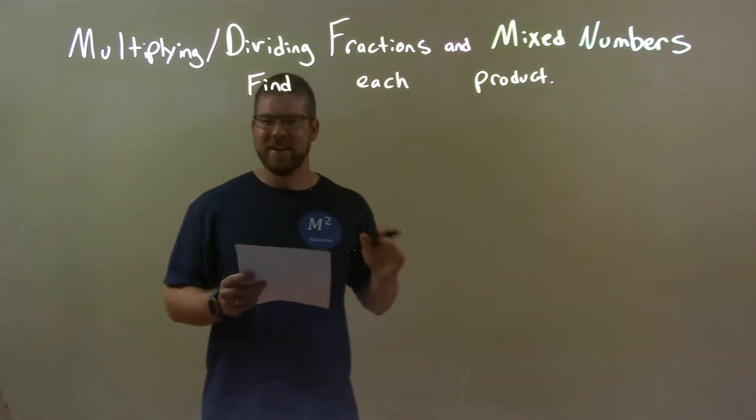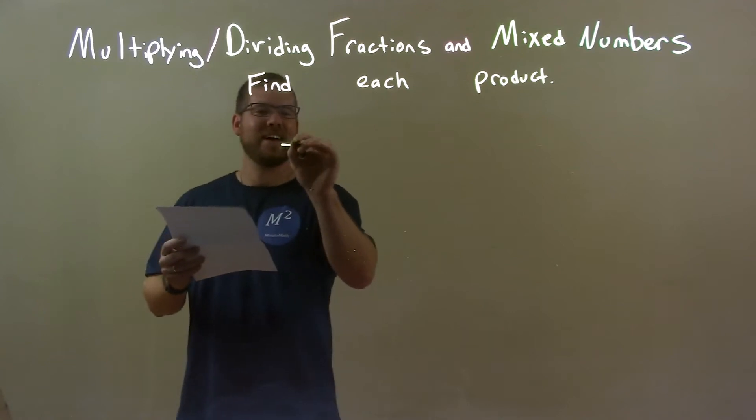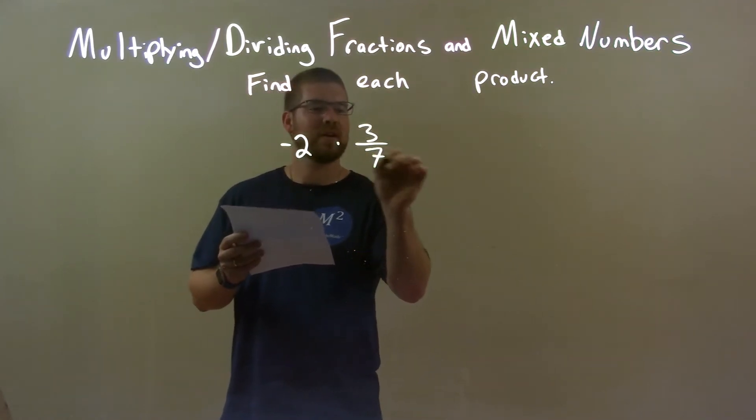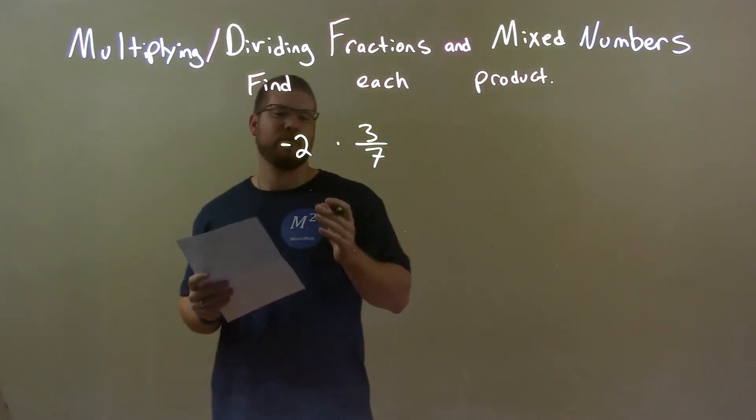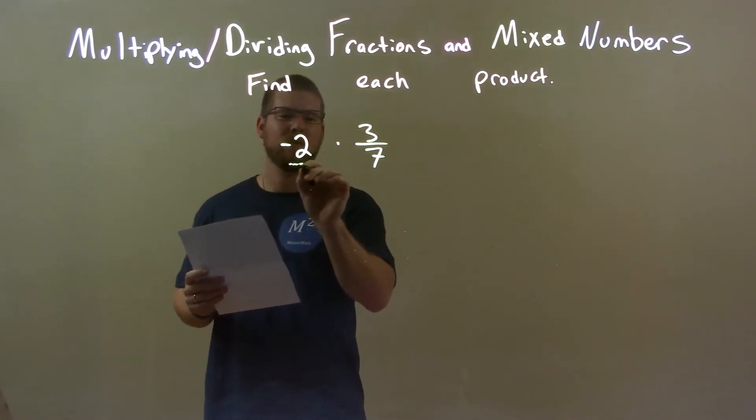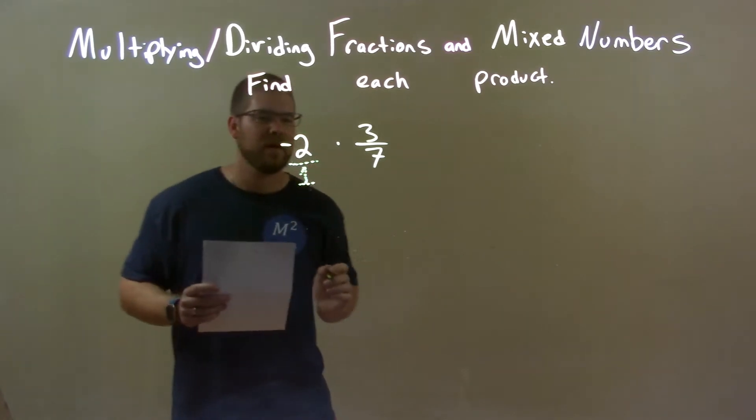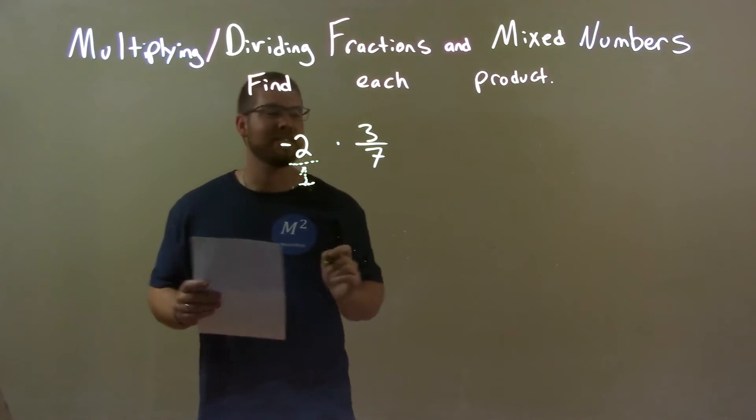So if I was given these numbers: negative 2 times 3 over 7. Well, we know that negative 2 is the same thing as negative 2 over 1. So it's like negative 2 over 1. Hopefully you can see that 1 with the dot set there, right?